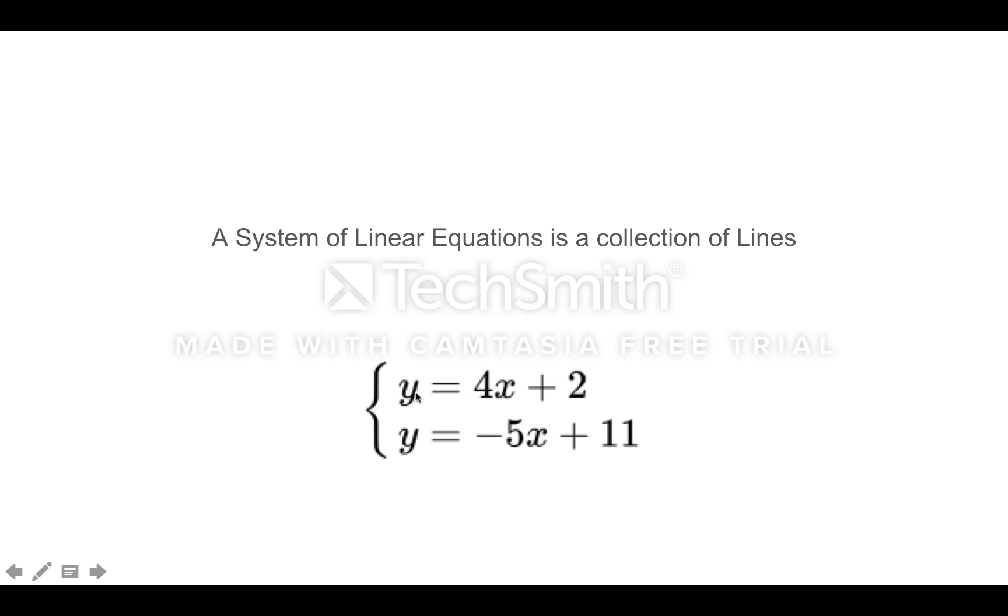Say we're looking at y equals 4x plus 2, which of course is a line with slope 4, y-intercept 0, 2, and y equals negative 5x plus 11, another line. This one happens to have a negative slope. These are lines. This is called a system of linear equations.